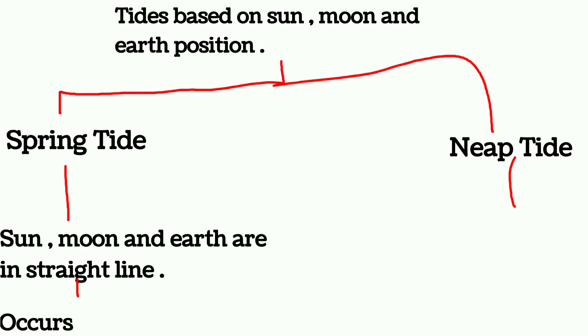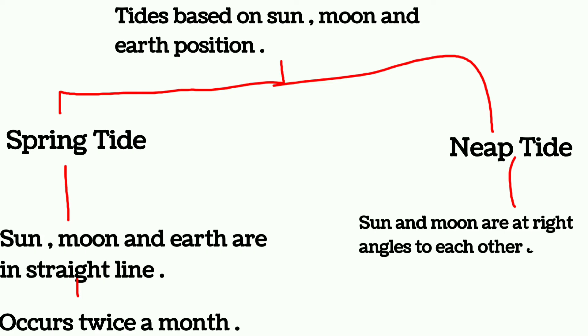For neap tide, sun and moon are at right angles to each other and the forces of the sun and the moon counteract each other. These tides occur at a gap of seven days.